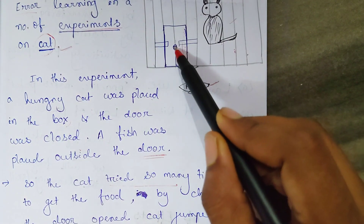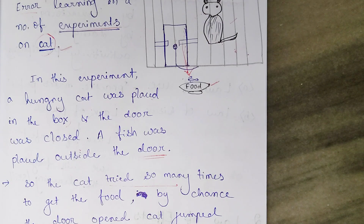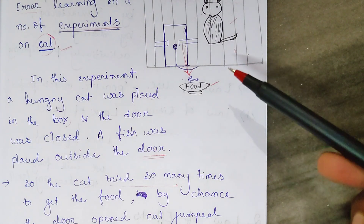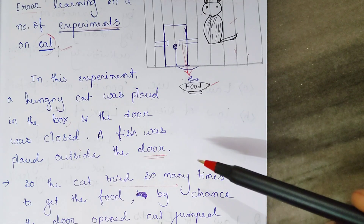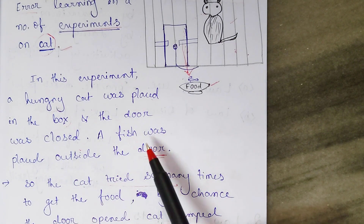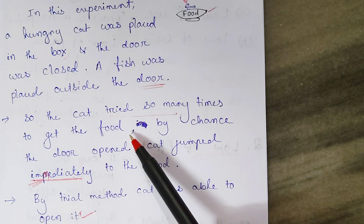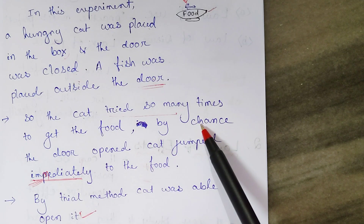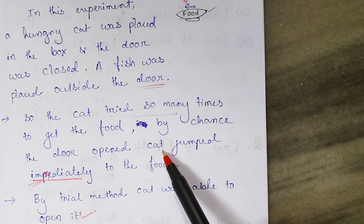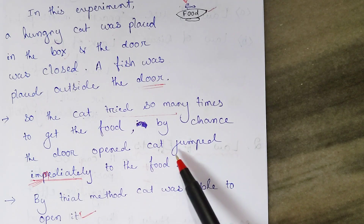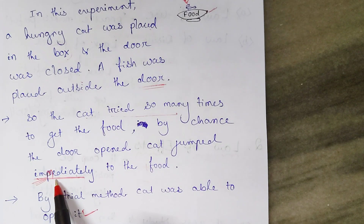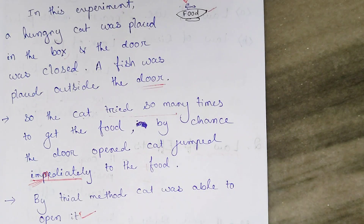There was a wire inside the box — if the cat pressed the wire by chance, the door would open. A fish was placed outside the door. The cat tried many times, not knowing the trick. By trying so many times, the door eventually opened by chance, and the cat immediately jumped out and got the food. So by the trial method, the cat was able to open the door.